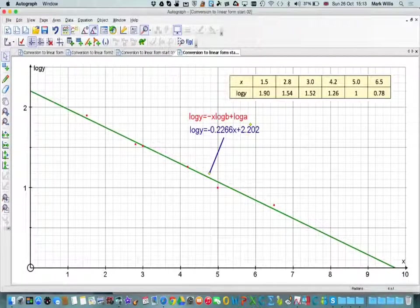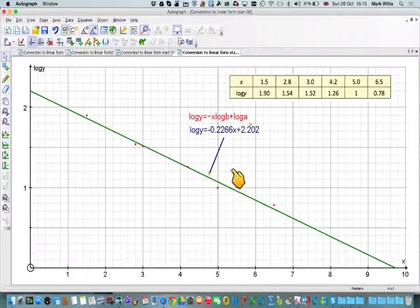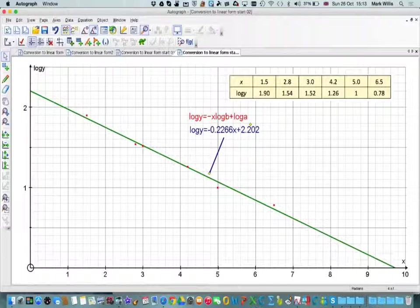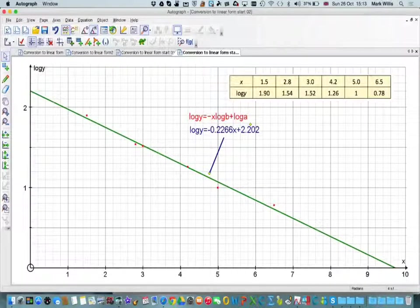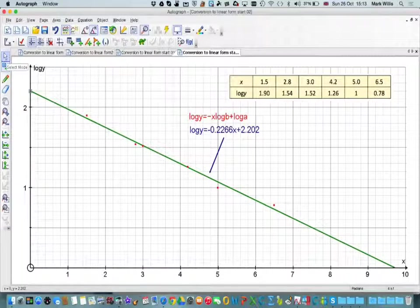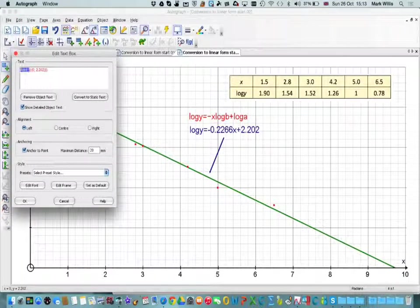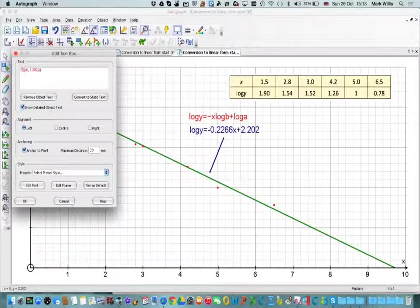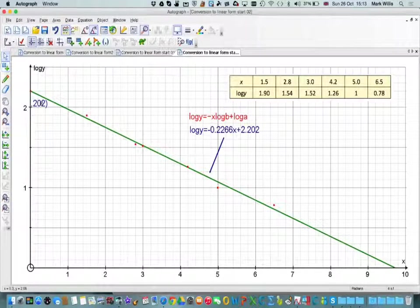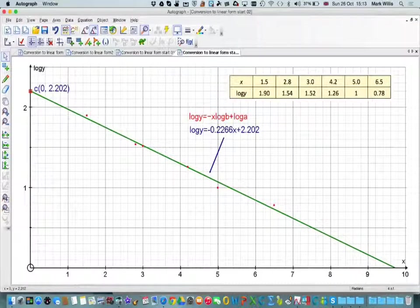If we line these up, we can see that log b has to be equal to 0.2266 and log a has to be equal to 2.202. However, we won't have Autograph in the exam, so in order to find log b this comes from the gradient of this line and log a comes from the y-intercept which is this point here. We can get that point by selecting point, put a point there, and go back to select mode. I'm just going to change color to red and then do text box.